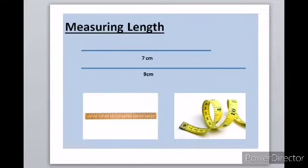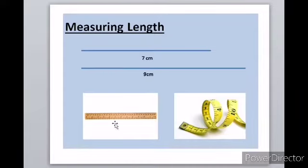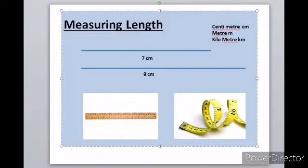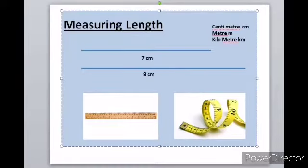Do you remember in the first term we learned about length? We learned about measuring length — if there is a line, how to measure it; if there is a long ribbon, long cloth, long wall, and the height of a building or tree. All these we measured using length. We use a ruler or tape to measure length. We measure length in cm, m, and km. Length is just one dimension, one straight line.